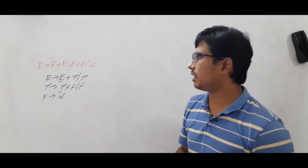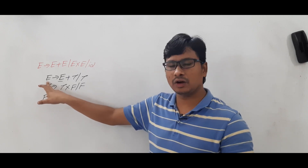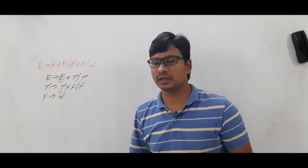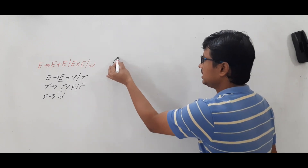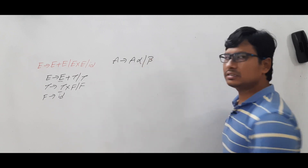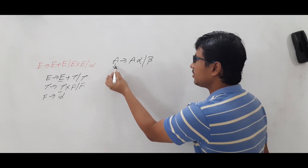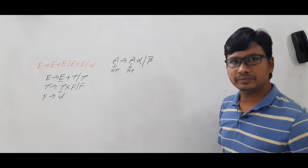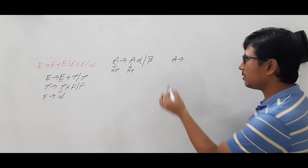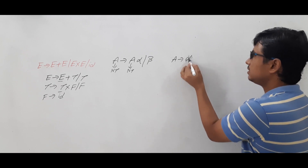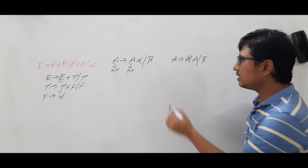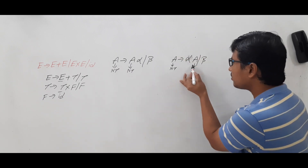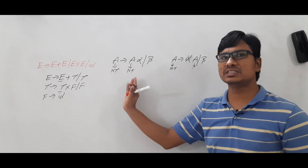I call it a left recursive grammar because whatever non-terminal is on the left-hand side also appears immediately on the left of the right-hand side. For example, A → Aα | β is a left recursive grammar — A appears on the left-hand side, and also immediately on the left in the right-hand side. Similarly, A → αA | β is a right recursive grammar because A appears on the right side of the production's right-hand side.